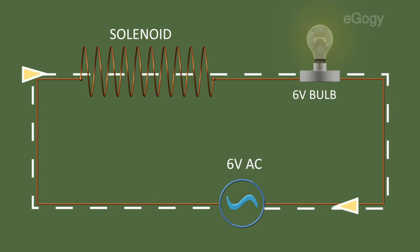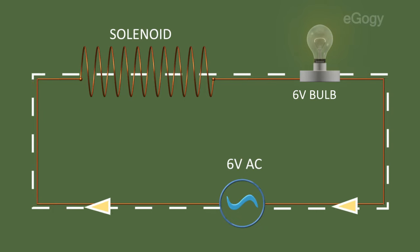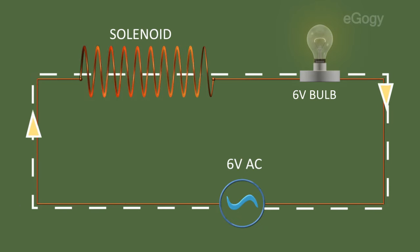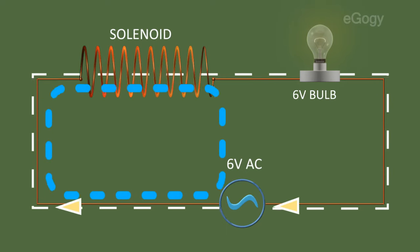When an AC passes through a solenoid, the magnetic flux linked with it changes. This flux change induces an EMF in the solenoid. This EMF opposes the EMF in the circuit.